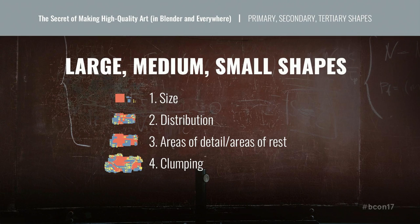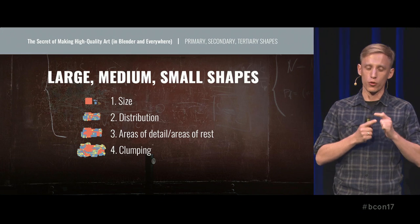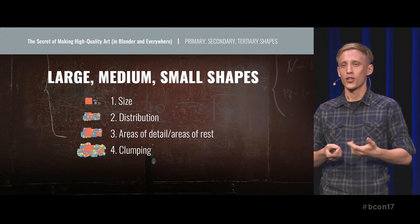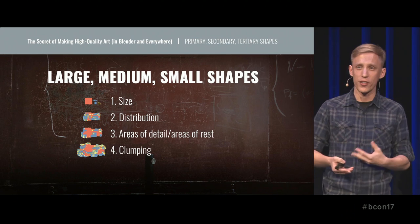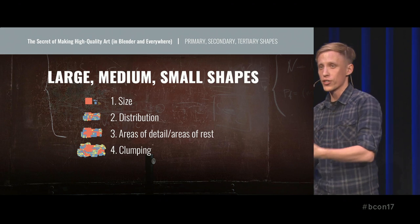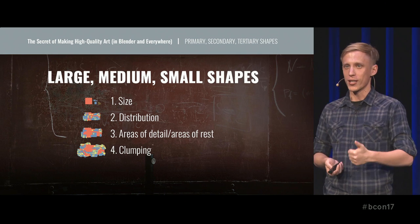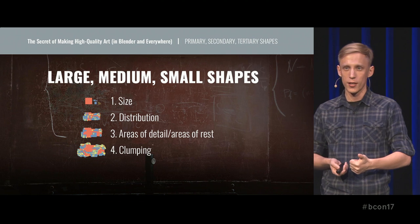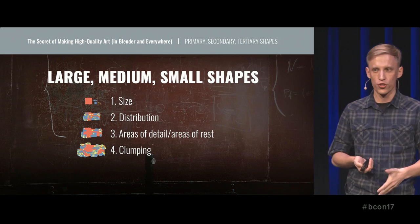So these are very important things to consider when you're basically making an image. Let's once again recap them. First, have big, medium, small shapes. Have variety to the sizes of shapes in each of the three categories. Make sure that the distribution of shapes inside the composition is somewhat unpredictable and chaotic. Balance the areas of details with the areas of rest. And allow these clumps or groups of shapes to flourish.